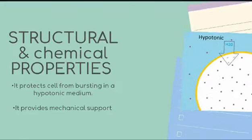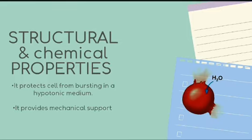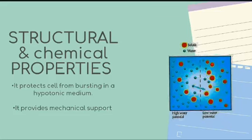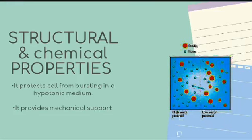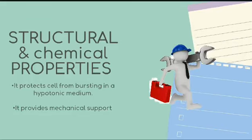The cell wall protects the cell from bursting in a hypotonic medium. The hypotonic medium is the medium when the external water potential is less negative than the water potential of the cell. When the cell is transferred to an environment of less negative water potential, it gains water by osmosis and bursts due to over-intake of water. Water potential is simply defined as the potential energy of water molecules.